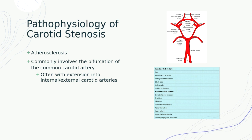There's a table on the right with risk factors for stroke. The modifiable risk factors include smoking, diabetes, atherosclerotic carotid artery disease, AFib, and heart failure. The non-modifiable inheritable risk factors include age, prior history of stroke, family history of stroke, Black race, male gender, and sickle cell disease.